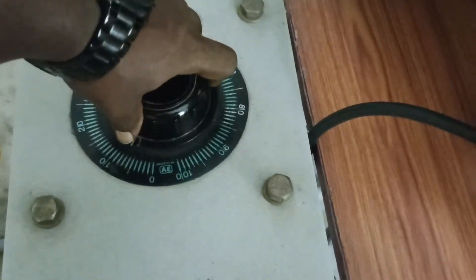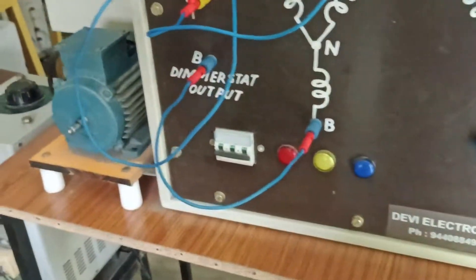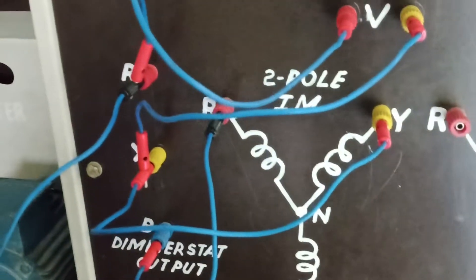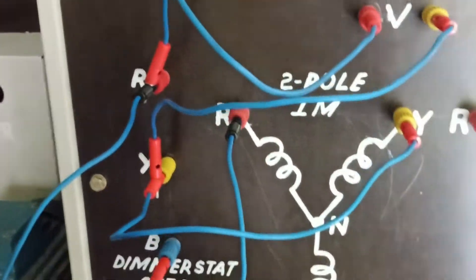When you vary the autotransformer, you can see that variation in this panel. You need to run the induction motor. For a two-pole induction motor, the speed you will get is almost equal to 3000 RPM.